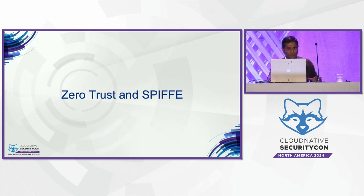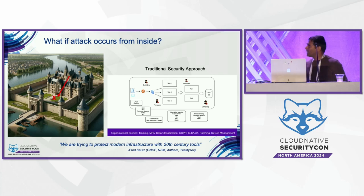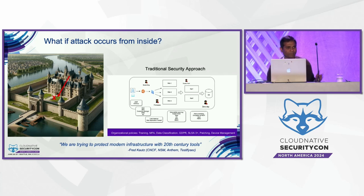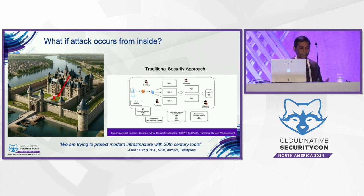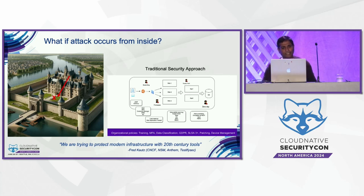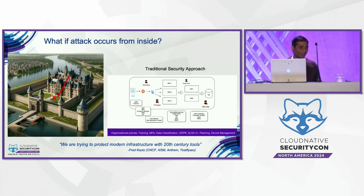Traditional security models today still use legacy technologies with a moat structure — you have this beautiful castle you protect with a moat. But what if the attack happens from the inside? Someone could start attacking inside the castle and you wouldn't know. This is what's happening today: spoof attacks, user impersonation attacks, and lateral movement attacks occur because traditional security thinks that once a user has been verified, we can just trust them blindly, or that since the firewall let in a request, we can trust it.